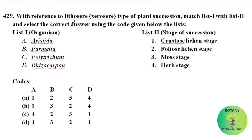With reference to Lithosere (xerosere type of plant succession), match list 1 (organisms) with list 2 (stage of succession). Aristida is a herb found in the herb stage. Parmelia is a foliose lichen found in the foliose lichen stage. Polytrichum is a moss present in the moss stage. Rhizocarpon is a crustose lichen found in the crustose lichen stage. The correct option is option C.